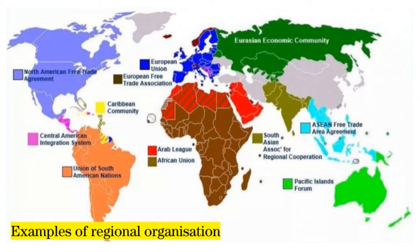While in many instances a regional organization is simply referred to as an international organization, in many others it makes sense to use the term regional organization to stress the more limited scope of a particular membership. Examples of regional organizations include, amongst others, the African Union, Association of Southeast Asian Nations (ASEAN), Arab League, Caribbean Community, Council of Europe, Eurasian Economic Union, and European Union.